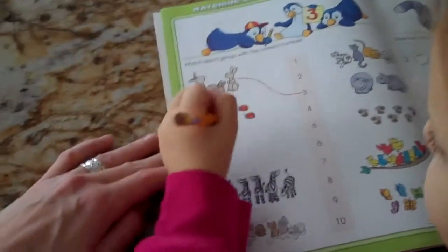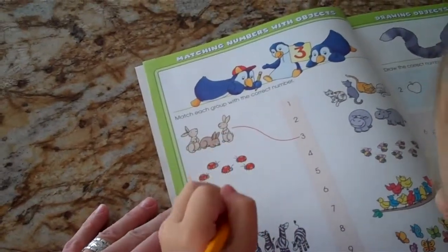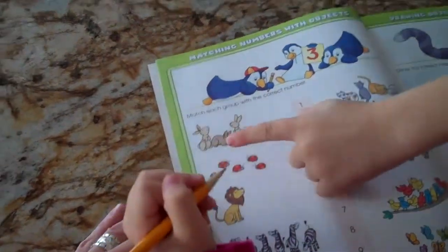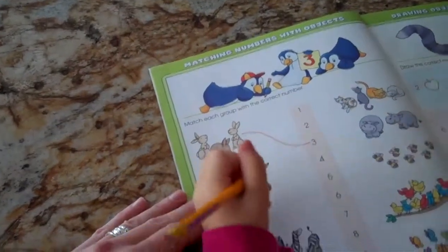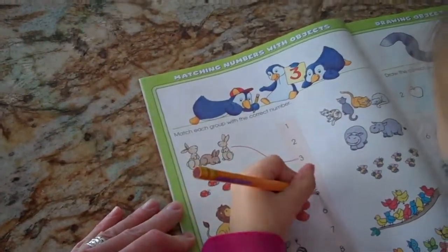You draw a line to three. So how many ladybugs? One, two, three, four, five. So you have to draw a line from the ladybugs. One, two, three, four, five. No, she's right. To the number five. Good job.